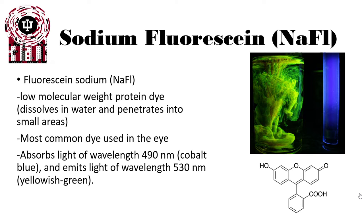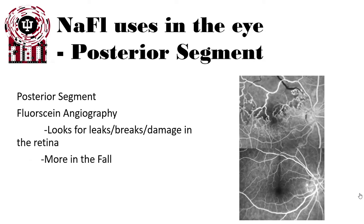It absorbs light at wavelengths of 490 nanometers, around cobalt blue, and emits light at wavelengths of 530 nanometers, around yellowish green. We can see an image here of fluorescein being instilled into a liquid solution and excited by a blue light — after being hit with cobalt blue light, it starts to glow that light green color.